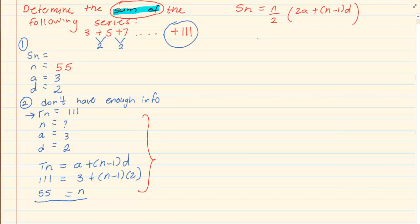We use the S_n formula. Again, use the correct formula. We are doing arithmetic. Substitute the information you have. Put it in exactly as it is in your calculator and then you get the answer which is 3135.